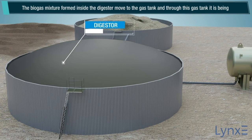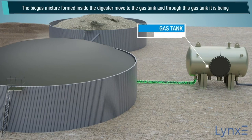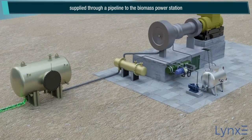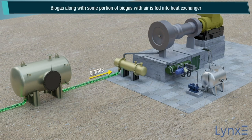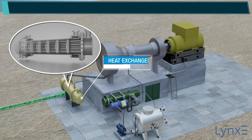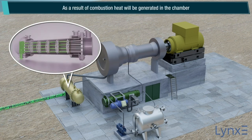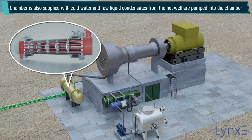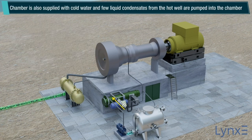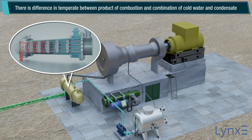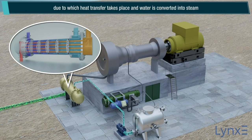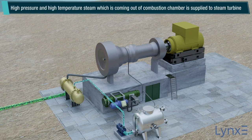The biogas mixture formed inside the digester moves to the gas tank, and through this gas tank it is supplied via a pipeline to the biomass power station. Biogas along with some portion of air is fed into the heat exchanger. As a result of combustion, heat is generated in the chamber. The chamber is also supplied with cold water and fuel liquid condensates from the hot well, which are pumped into the chamber. Due to the temperature difference between the products of combustion and the combination of cold water and condensate, heat transfer takes place and water is converted into steam. High pressure and high temperature steam coming out of the combustion chamber is supplied to the steam turbine.